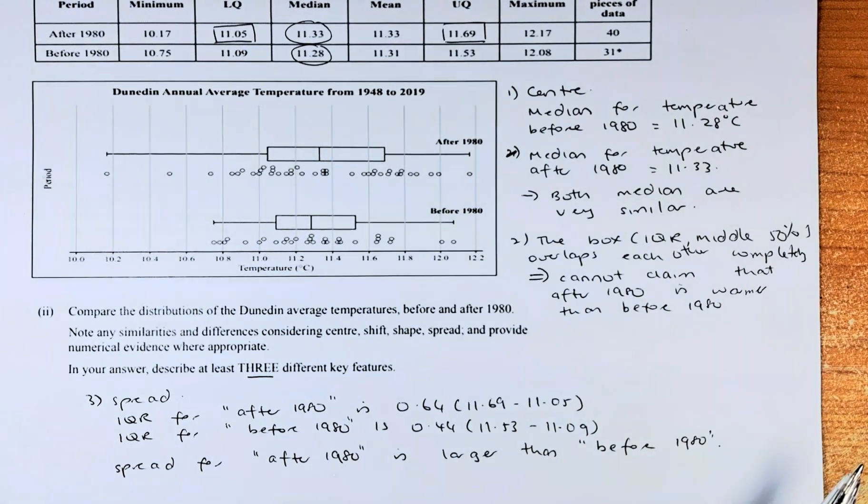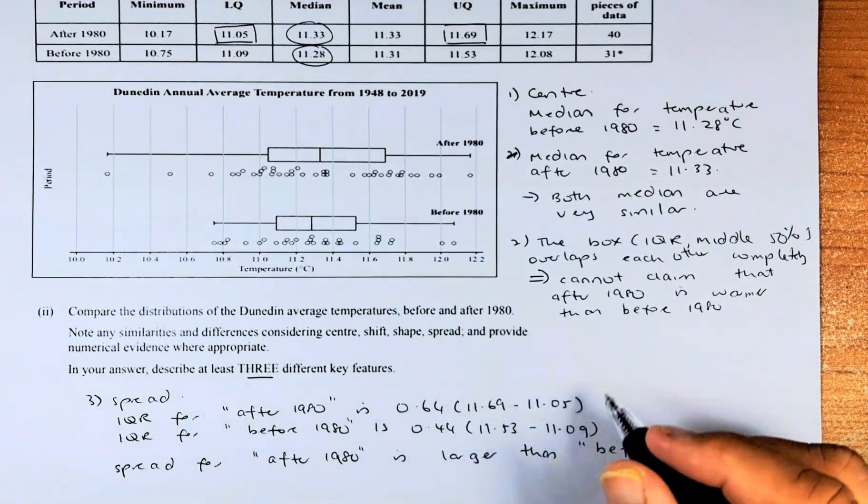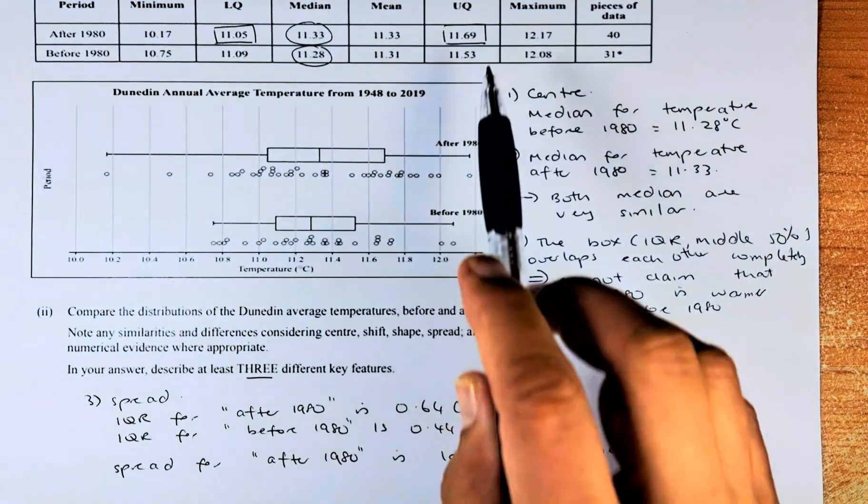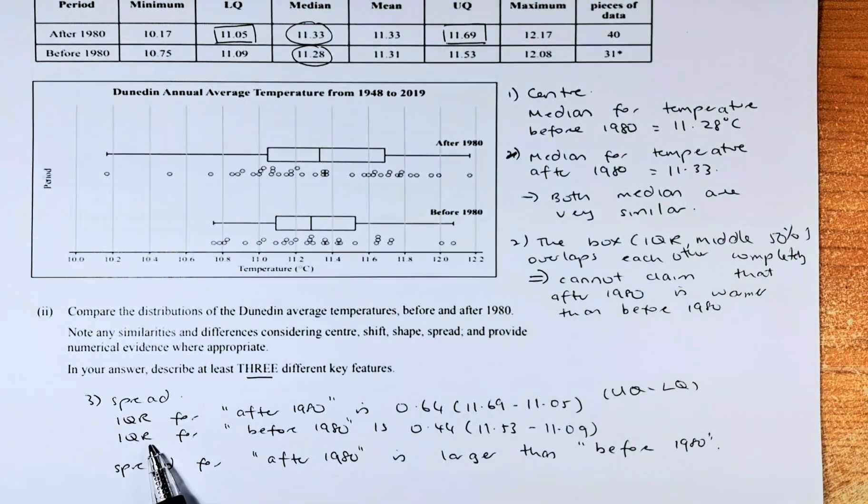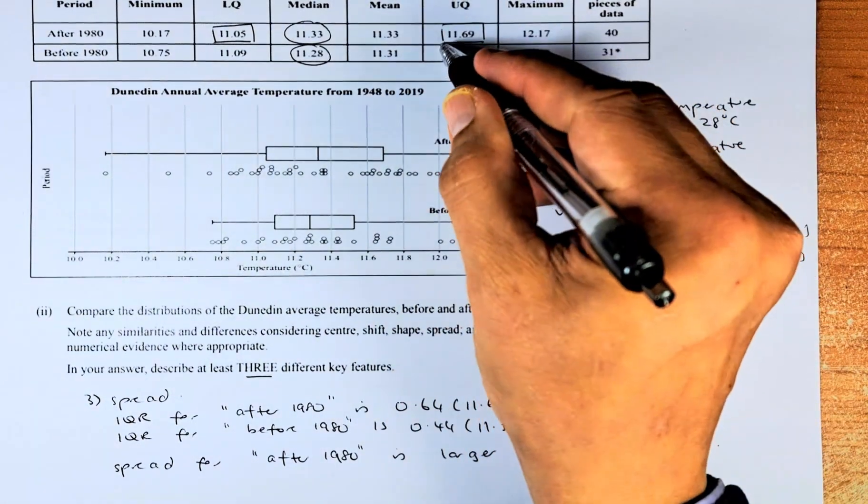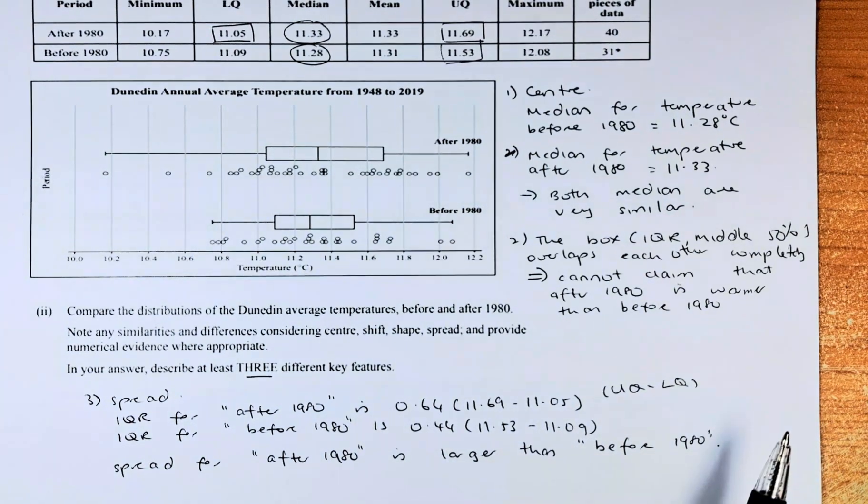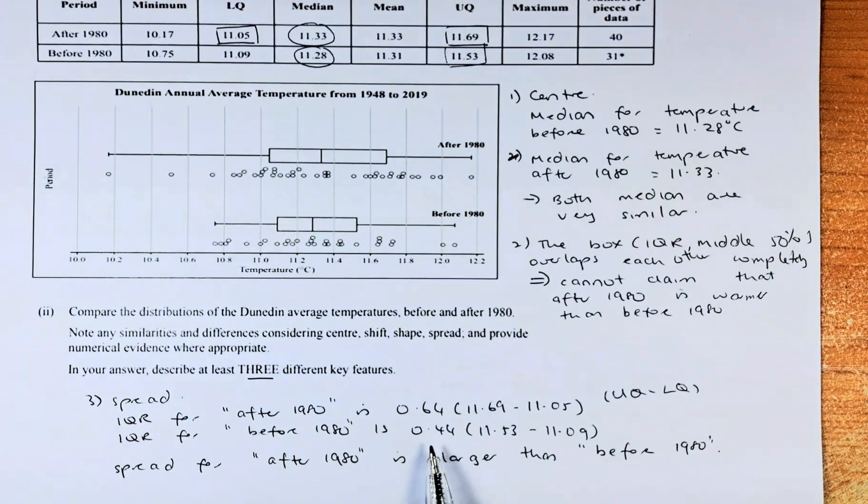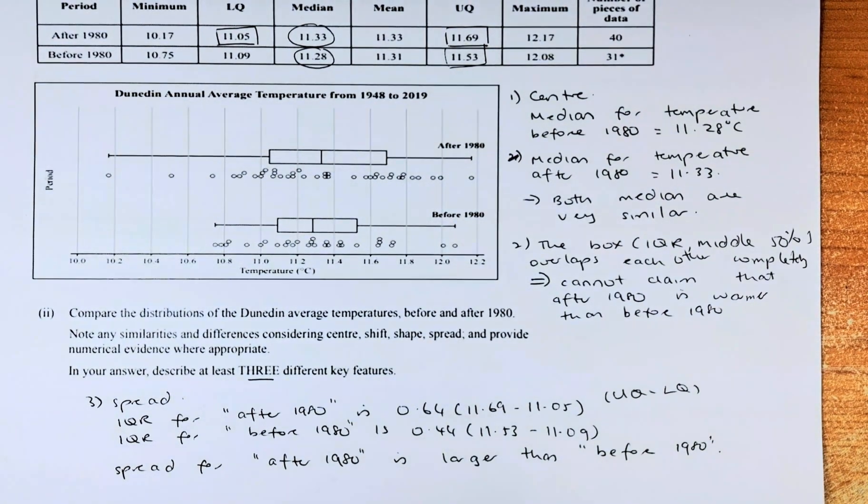Now we shall look at the spread. The spread is the interquartile range. Interquartile range is more important than the range. If you calculate the range, that is also fine. So interquartile range is upper quartile minus lower quartile. In our case for after 1980, it's going to be that number, 11.69 minus 11.33, which gives you 0.64. As you can see, the after 1980 has a bigger interquartile range than the before 1980. And that's why we say they have a bigger spread for after 1980 compared to before 1980.